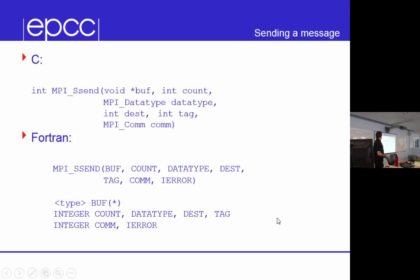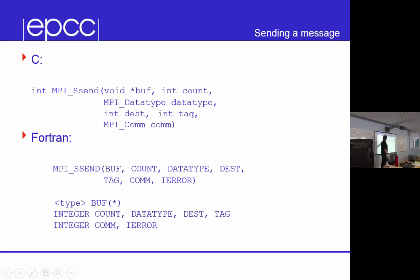So this is how we finally see how to send a message. In C, this is the prototype — MPI_SSEND returns an integer. Every MPI routine bar about one or two returns an integer flag for success or failure. You pass the buffer (the send buffer), a count and data type (how many of that type to send), where it's going (destination rank), a tag, and a communicator.